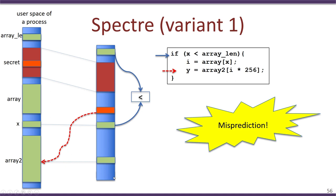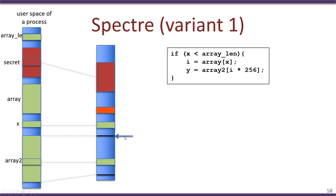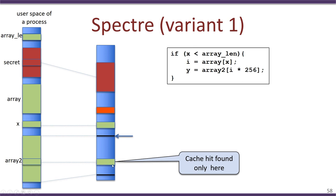The attacker's next step is to identify which block of array2 has been loaded into cache. He accesses every element of array2 sequentially and measures access time. The first element causes a cache miss and takes a long time; the second similarly; this continues until one particular element returns significantly faster. This shorter access time indicates that element is present in cache — placed there by the speculatively executed secret-dependent load — thus revealing information about the contents of the secret.